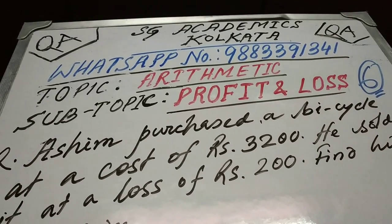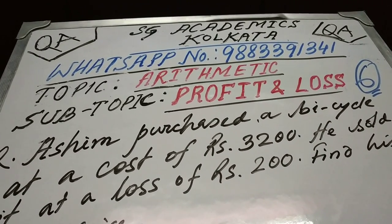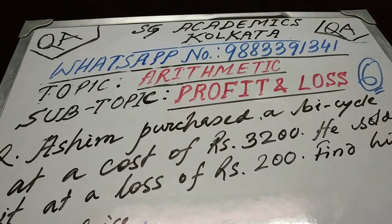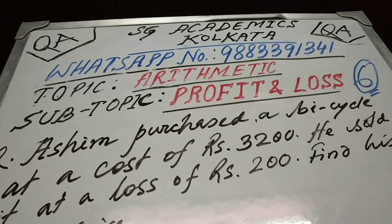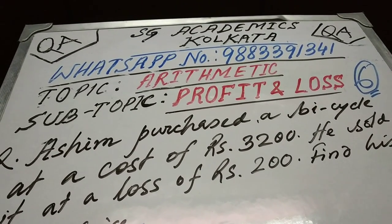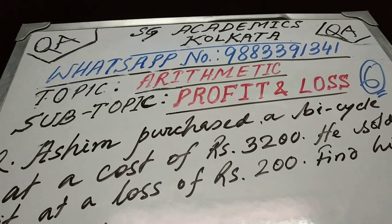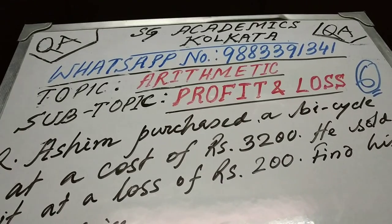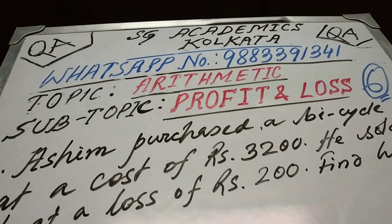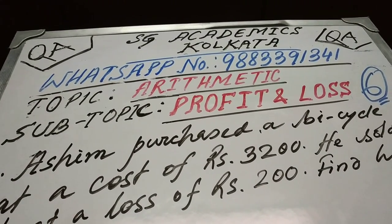Hello friends, we are back with another YouTube video tutorial on profit and loss. This is our sixth video on this particular topic. You're watching Academics Kolkata's official YouTube channel. Our WhatsApp number is 9883391341.